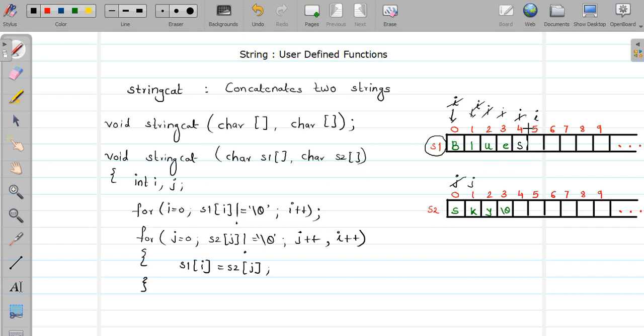First, this condition will be checked: is s2[j] not equal to null? Yes, it is not equal to null. It will transfer the content of s2[j] to s1[i], so 'k' gets transferred here. Again, j will be incremented as well as i. Again, s2[j] is not equal to null, so this 'y' will be transferred here, and j and i will be incremented. Is s2[j] not equal to null? No, now the condition evaluates to false, so it will terminate the loop.